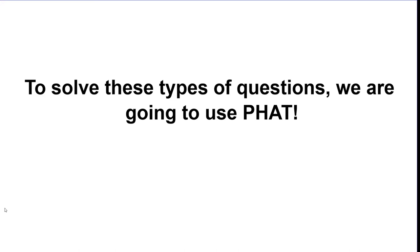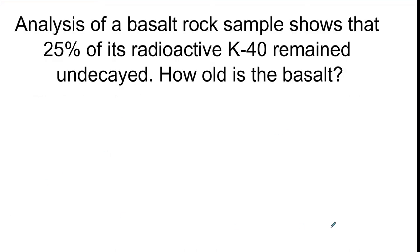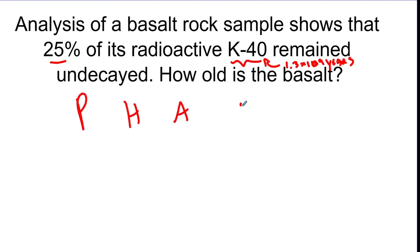There's a trick called the PHAT chart — an acronym for Percentage, Half-life, Amount, and Time. Here's an example: analysis of a basalt rock sample shows that 25% of its radioactive K-40 remained undecayed. How old is the basalt? K-40 has a half-life of 1.3 × 10⁹ years, which is 1.3 billion years. We'll set up a PHAT chart.